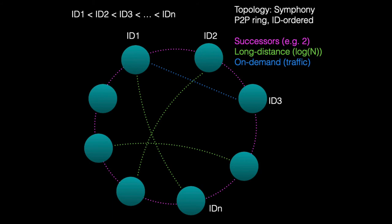On-demand links respond to traffic — if nodes 1 and 3 communicate frequently, EVO automatically triggers creation of a direct on-demand link between IDs 1 and 3, removing the need for a hop in between.